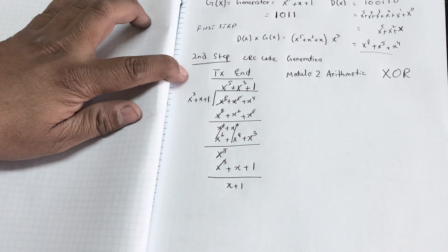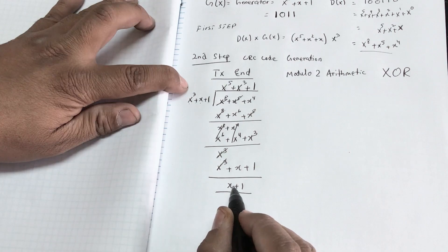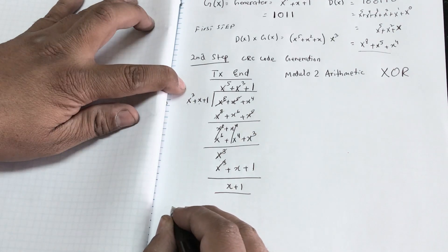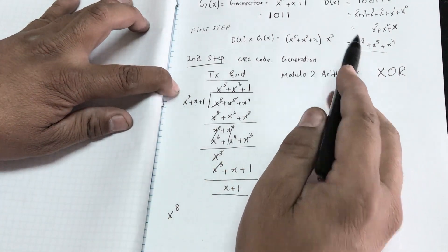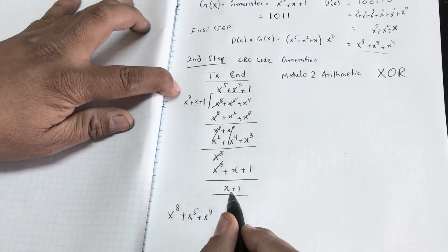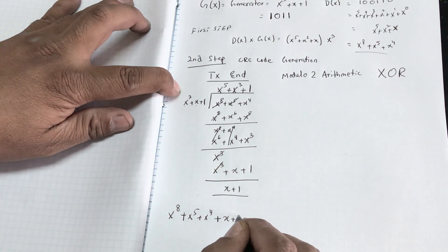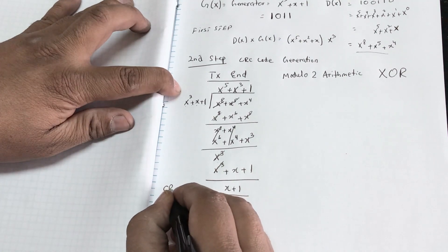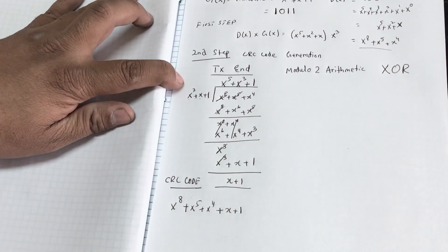The next step is to append the CRC remainder to our data. The prepared data at the transmitting side is: x⁸ + x⁵ + x⁴ (the original shifted data) plus x + 1 (the CRC code appended). This combined value is what gets transmitted.